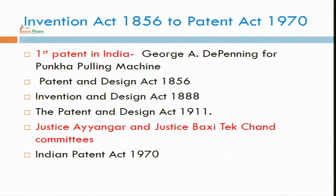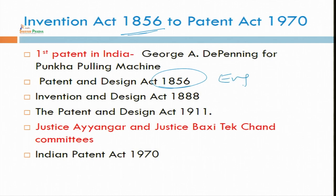Before we start other things relating to patent, I want to give a brief historical background of the Patent Act 1970. The first English patent act was passed in 1856, based on the English law. The first patent in India was given to George A. Dapning for the Pankha Pooling Machine. At that time there were no ceiling fans, but some jhala-type fans were there, which worked as fans. Dapning invented a Pankha Pooling Machine where some type of mechanical work was involved — someone had to hold it and rotate it for that particular fan in 1856.